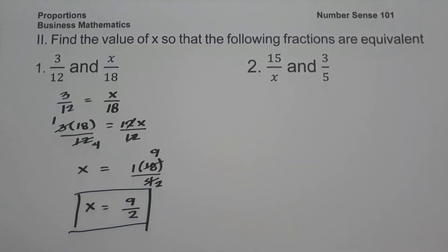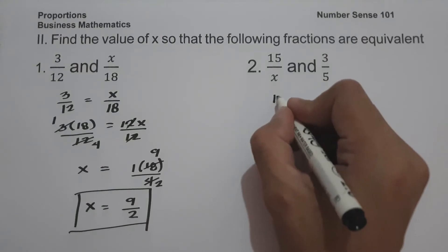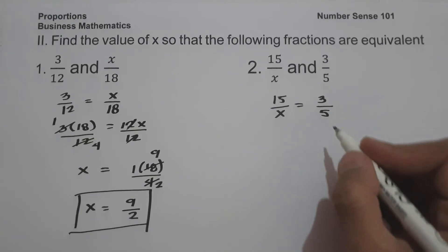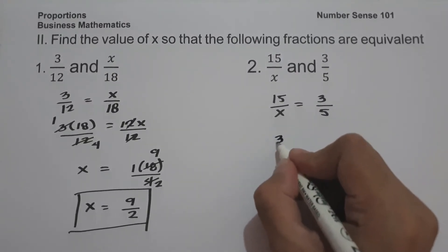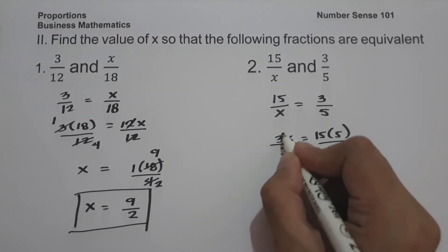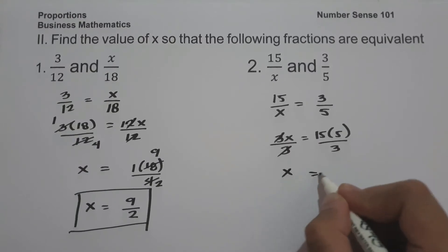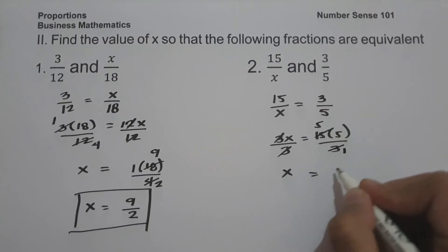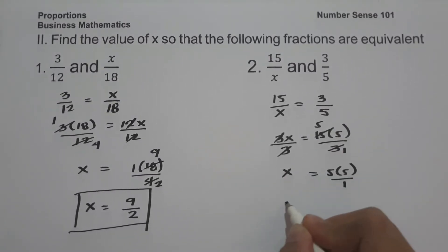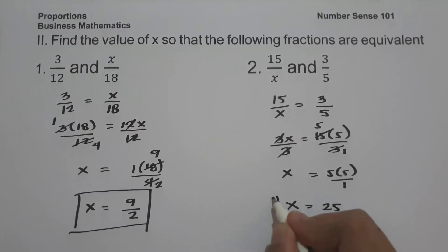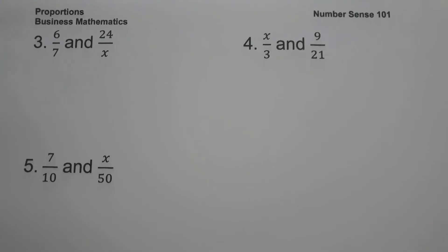On number two, we have 15 over x and 3 over 5. Setting up 15 over x equals 3 over 5, cross multiplying gives 3x equals 15 times 5. Dividing both sides by 3, since 15 and 3 are divisible by 3, 15 becomes 5 and 3 becomes 1. So x equals 5 times 5 over 1, which is 25. This is the value of x.